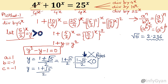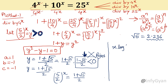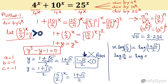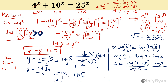So the solution left is (1 plus root 5) over 2. Put the value of y, that is (5 over 2) whole power x. So I will write (5 over 2) whole power x equal to (1 plus root 5) over 2. Now take log both sides. x log(5 over 2) equals log((1 plus root 5) over 2). By the property of log — log(a over b) can be written as log a minus log b — x value will be: log(1 plus root 5) minus log 2, divided by log 5 minus log 2.